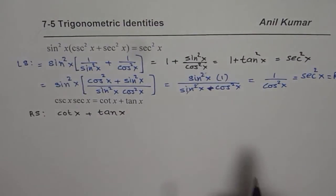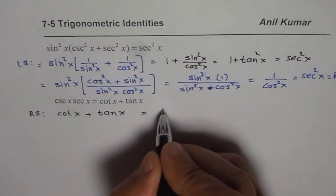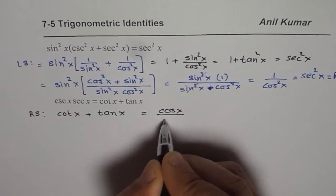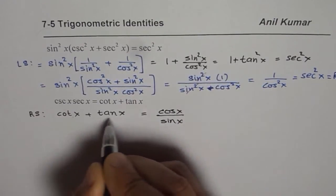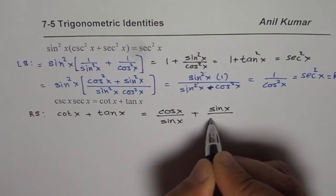Let us write them in terms of sine and cosine. So cot x can be written as cos over sine. We write cos x over sin x and tan x can be written as sin x over cos x.